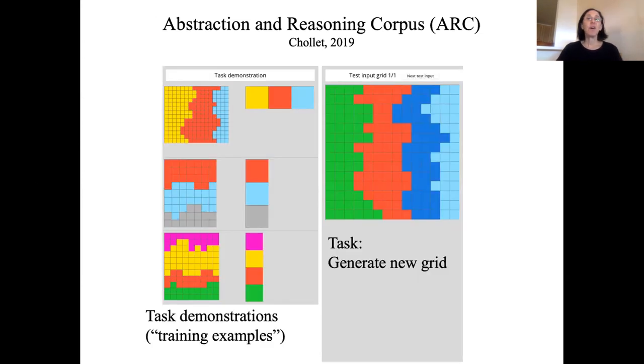His proposal was something rather like the copycat program, except in a much more visual system. He has this, what he calls the ARC corpus, the abstract reasoning corpus that he proposed, hand built, not generated. Here's a task.